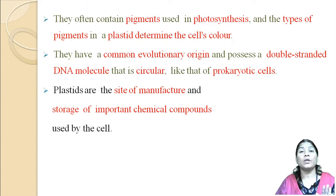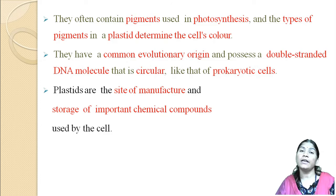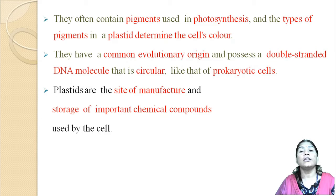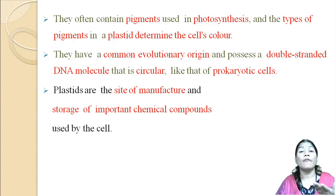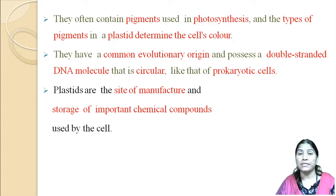The different types of pigment in a plastid determine the color of the cell. For example, if green pigments are present in the cells, then the cells appear as green color. So the plastids determine the color of the cell.